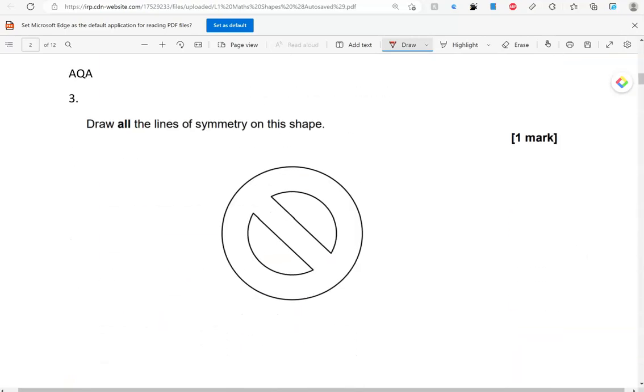Draw all the lines of symmetry on this shape. The most obvious one would be here, and then we can have another one here, but that's all, two of them.